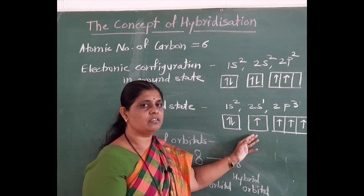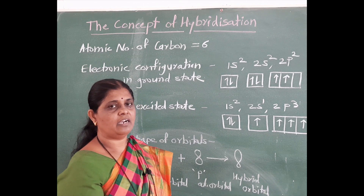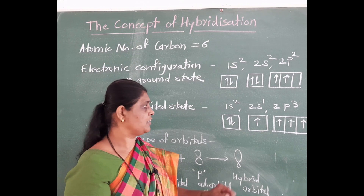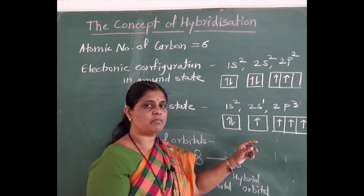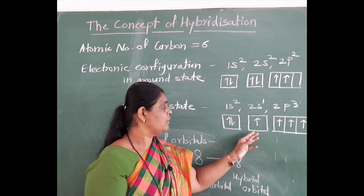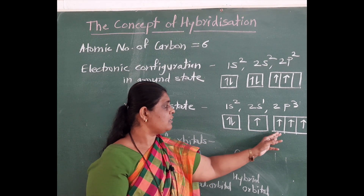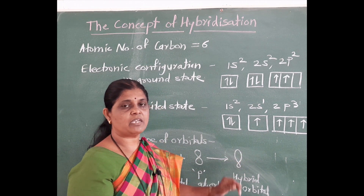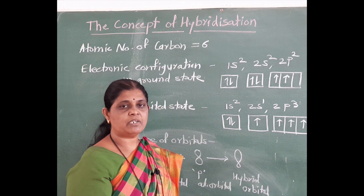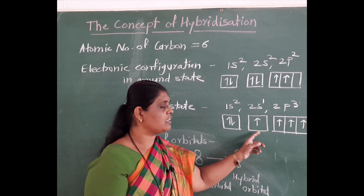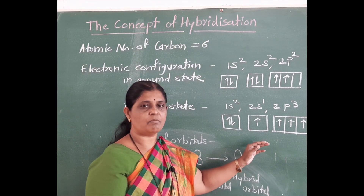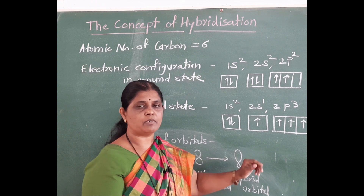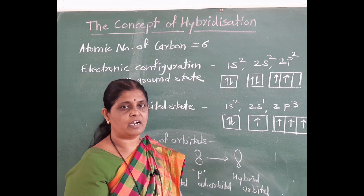Before bonding, these orbitals are mixed together to form hybrid orbitals, and that is known as hybridization. In hybridization, there is mixing of different types of orbitals or different shape orbitals to give rise to same energy orbitals. The definition of hybridization is: mixing and recasting of atomic orbitals to give rise to equal energy, equal shape orbitals — that is known as hybridization.